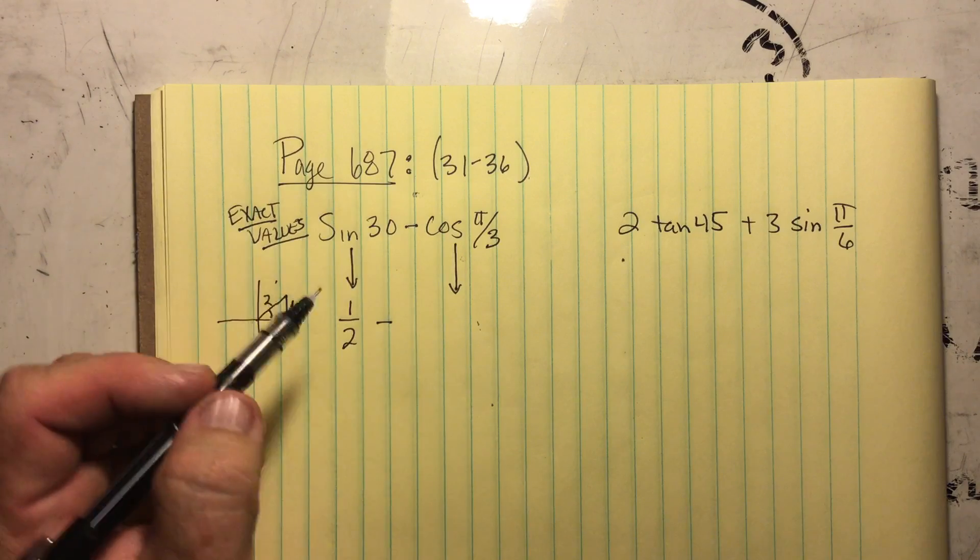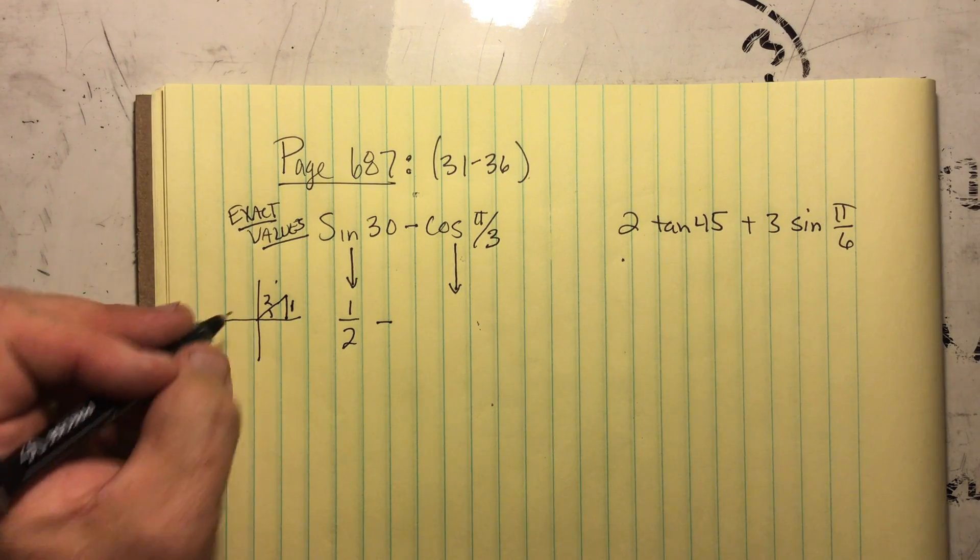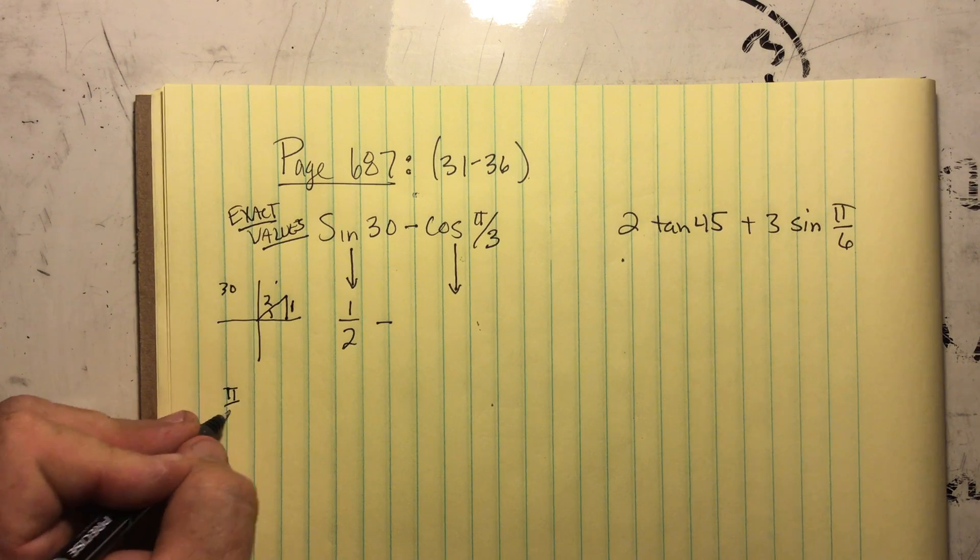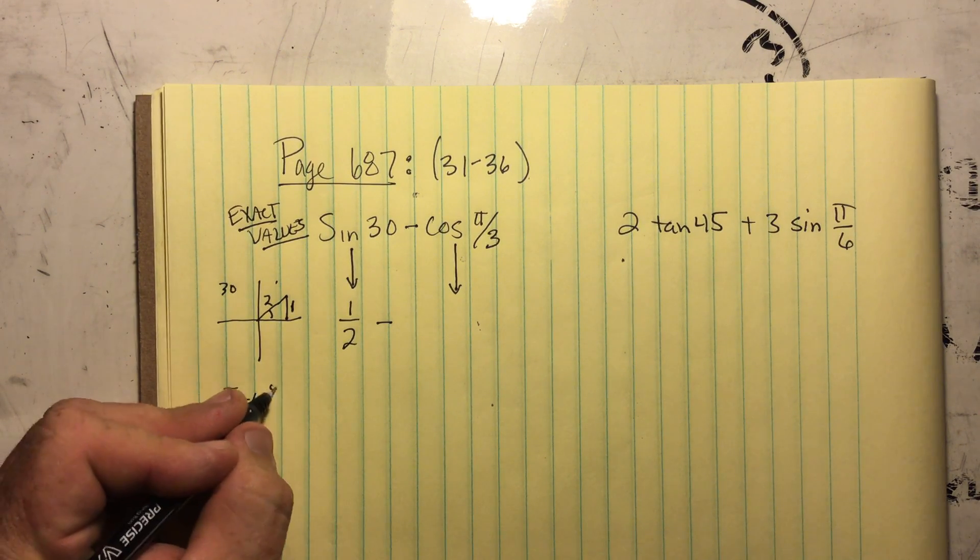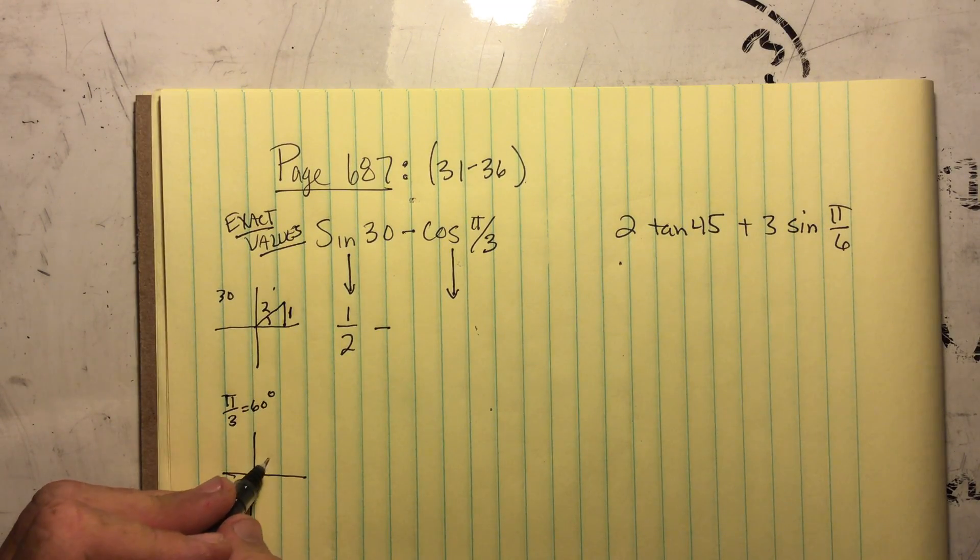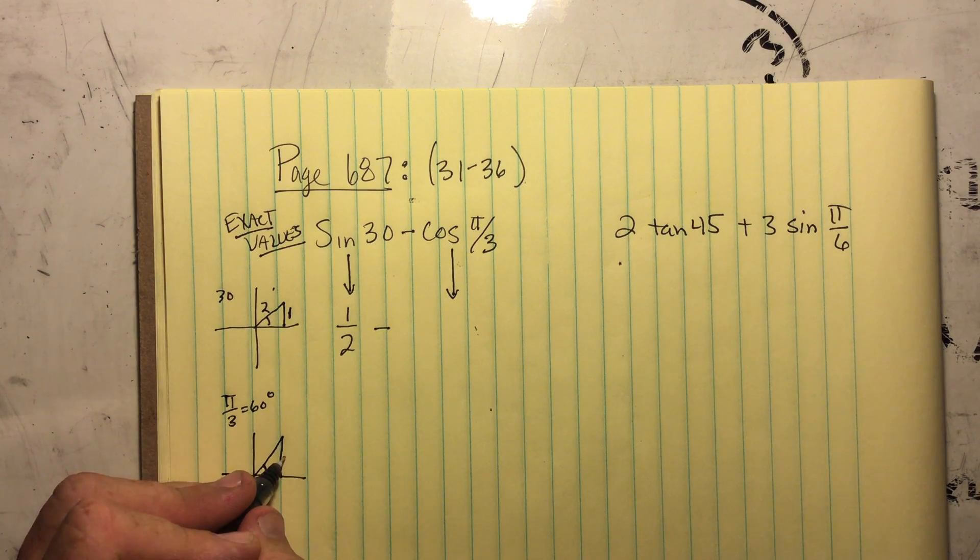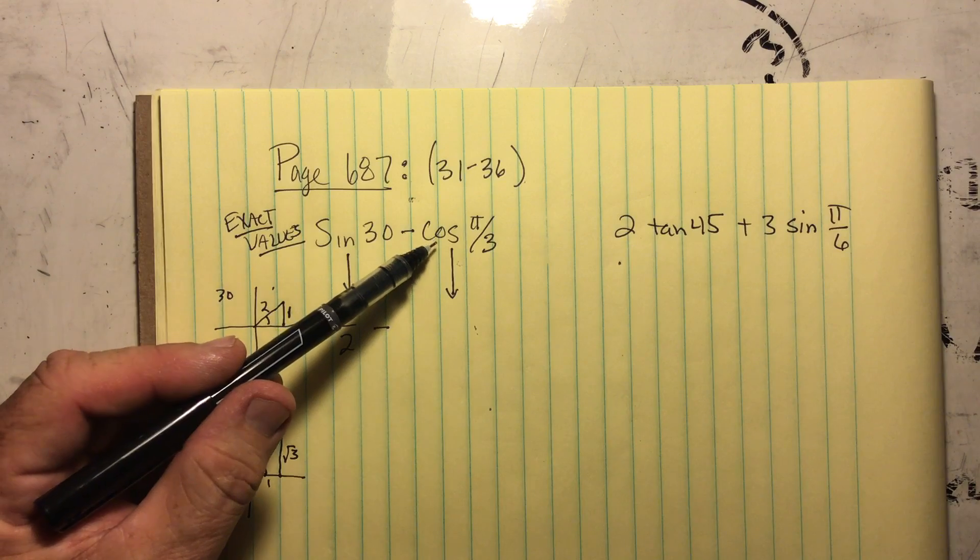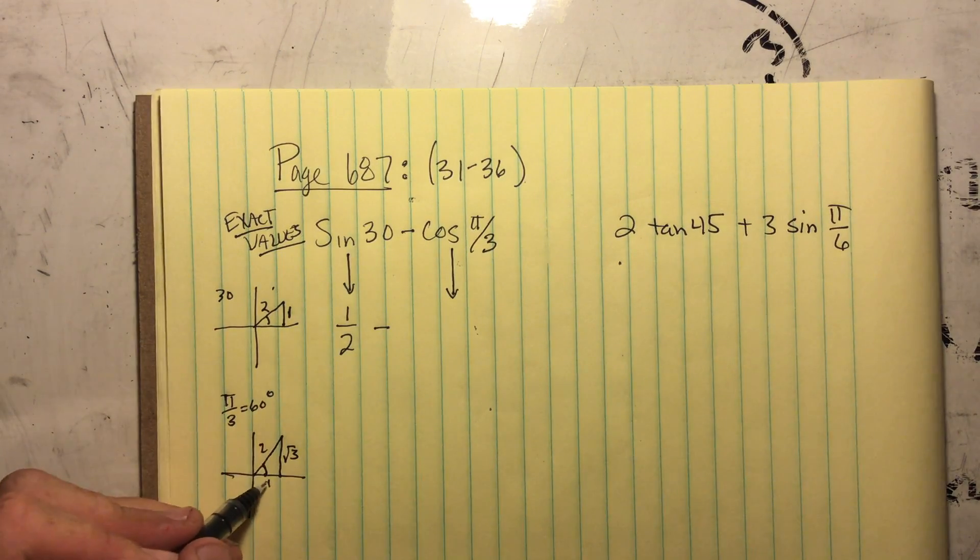Subtract cosine of π over 3. So this is 30 degrees. The cosine of π over 3 is the same as 60 degrees. So if I look at my triangle, it's 60 degrees, which is going to equal root 3 and this will be 1 and that will be 2. So the cosine of π over 3 is going to be 1 half.